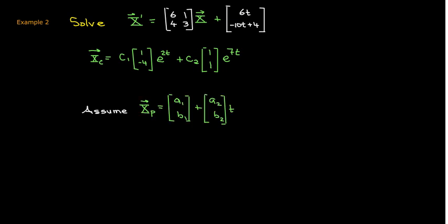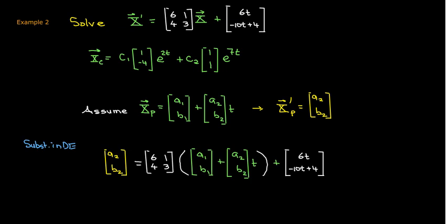So let's just focus on the particular solution. Again, since the components of my f vector have the form at plus b, then we're going to assume that we have a vector which is a constant vector plus another vector times t.